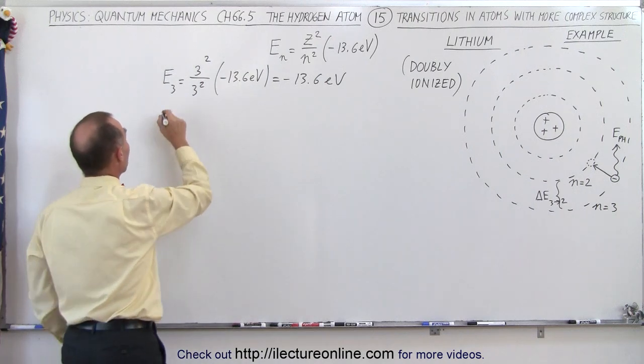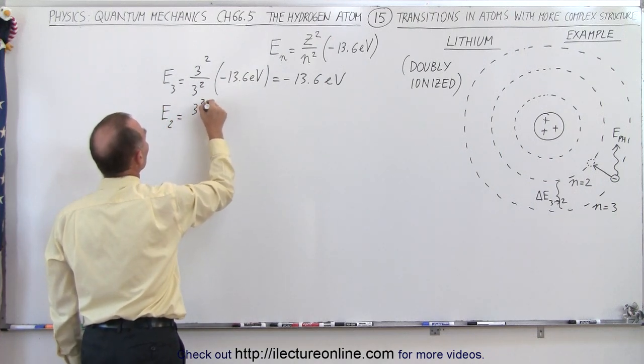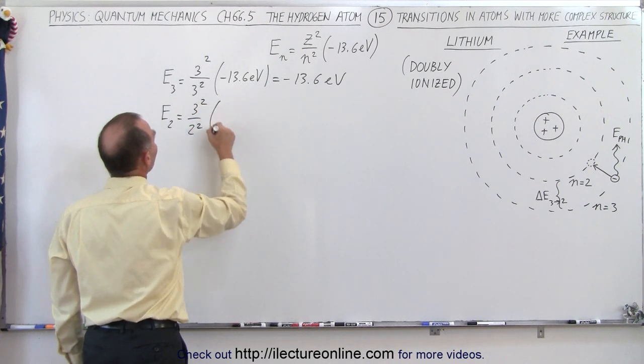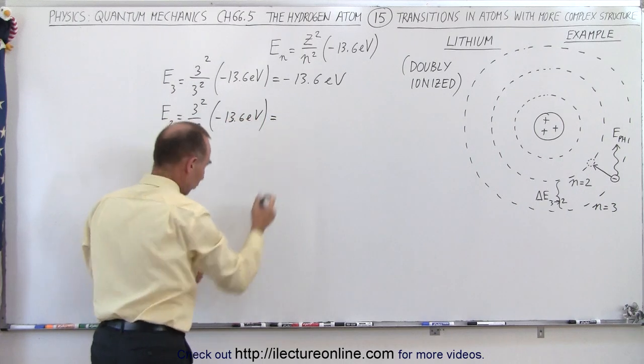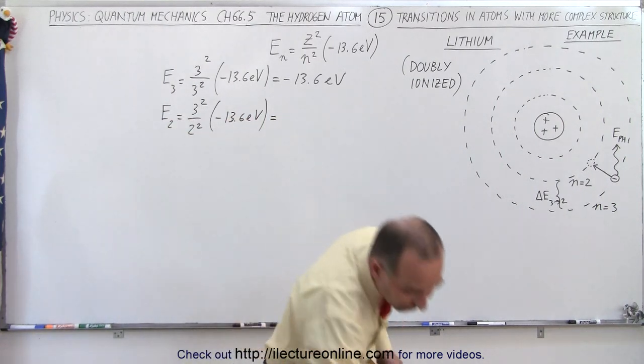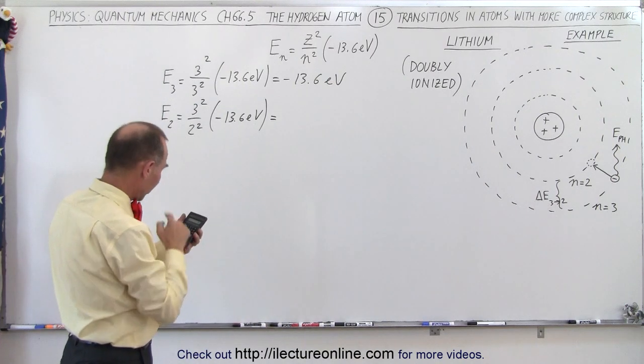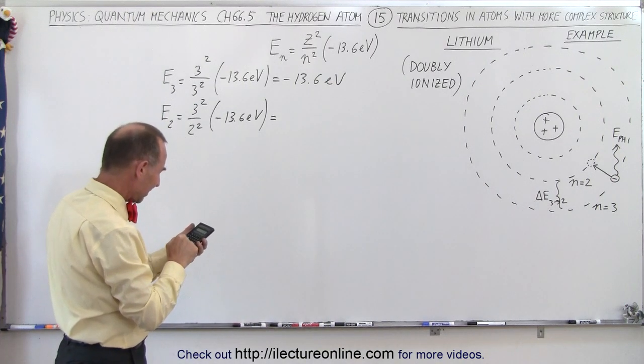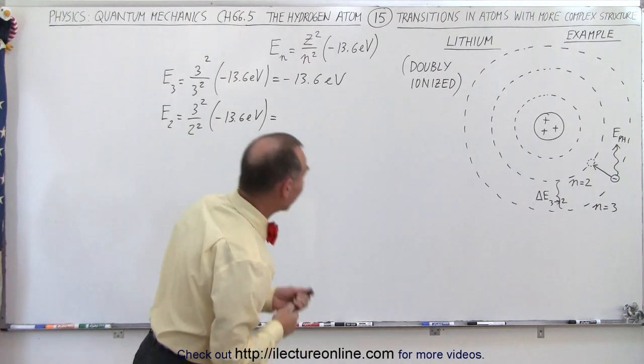Now we'll calculate the energy for the second level, which is 3 squared divided by 2 squared times the minus 13.6 electron volts, and of course that number is going to be bigger in a negative sense. So we have 13.6 times 9 divided by 4, and we get 30.6 electron volts, so minus 30.6 electron volts.